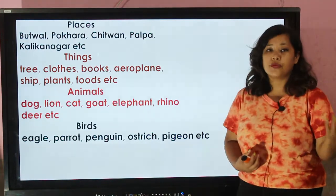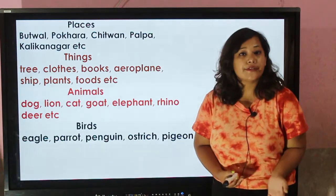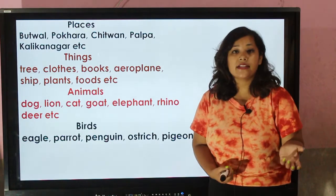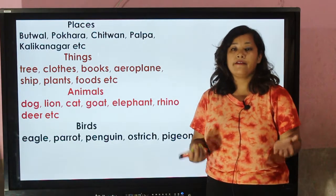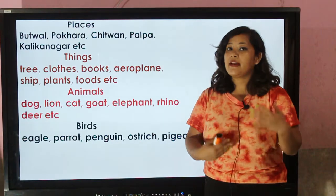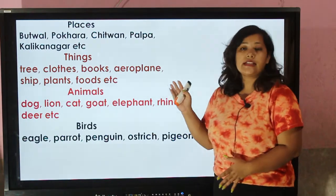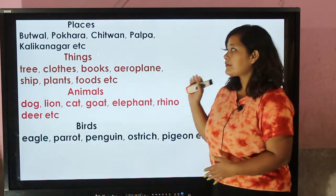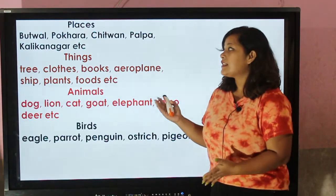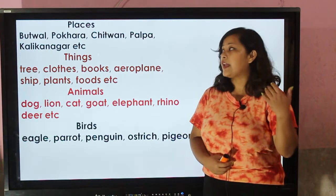Suppose if we are going to describe about Butwal — like 'Butwal is a very beautiful city, Butwal is one of the famous cities of Nepal' — instead of repeating the name Butwal time and again, we can use 'it' instead. Like: 'Butwal is one of the famous places, it is a very beautiful city.' In this way we can use 'it' instead of a place name.